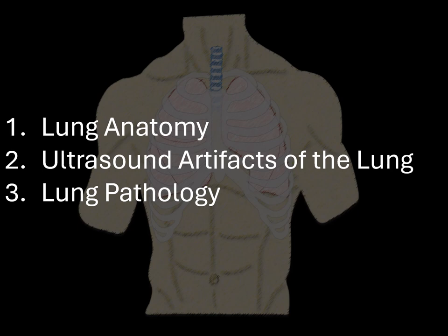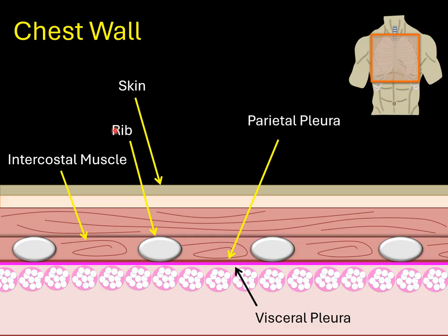Let's start with the anatomy. Here's an illustration of the chest wall, including skin, ribs, intercostal muscle, and visceral and parietal pleura that are touching each other. This will be very important when we perform lung ultrasound.